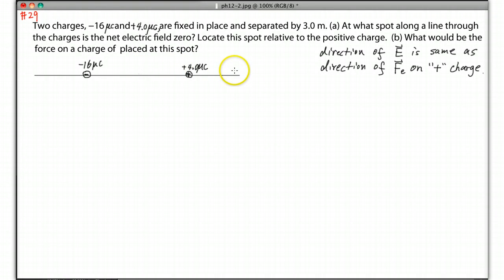What if there is a spot here? If you place a positive charge at this location, the positive charge is going to push over there, and the negative charge is going to attract this way. This should be okay.